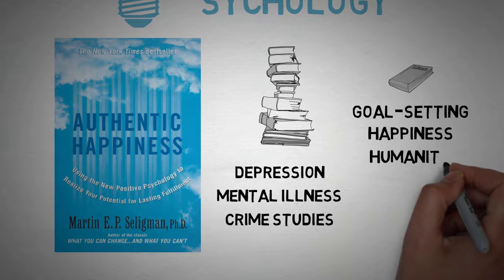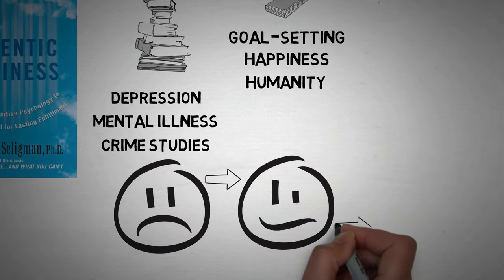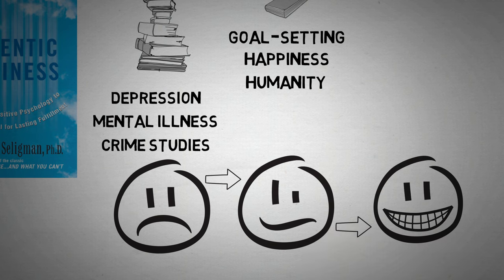Around the time this book was written, we knew how to get people from unhappy to neutral, but we weren't too sure on how to get them from neutral to happy. So he says that there are two types of happiness.